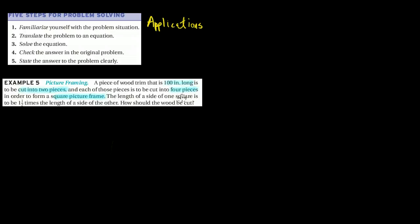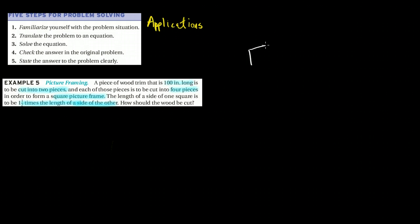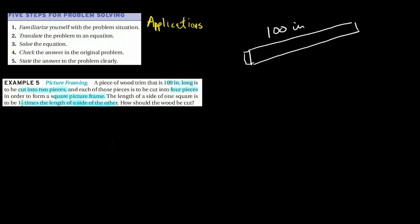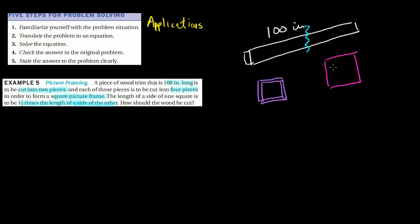So we have something that is 100 inches long and it's to be cut into two pieces. And each of those pieces is to be cut into four pieces in order to make a square picture frame. The length of the side of one square is one and a half times the length of the side of the other. So there's two picture frames here. So here's what we've got. We've got a piece of wood that's 100 inches long. And we want to make a cut in the frame. And with that cut, we want to make one picture frame.